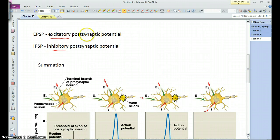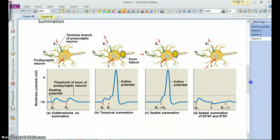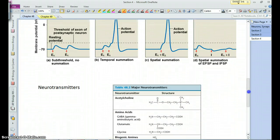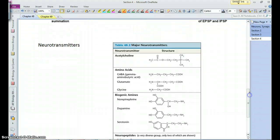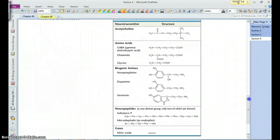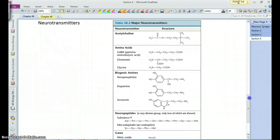So if the summation of the excitatory neurons, if their effect, their potential is greater than the inhibitory ones, you can get a nerve impulse occurring in that neuron. However, if the inhibitory one is at such a level that can prevent that excitatory impulse from stimulating the adjacent nerve and causing a nerve impulse.